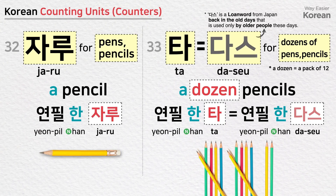다스 is a counting unit for dozens of pens or pencils. A dozen means a pack of twelve. 다스 is a loanword from Japan used in the old days and now mainly used by older people: a dozen pencils — 연필 한 다스.